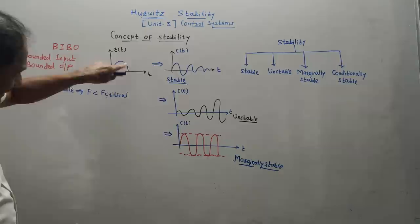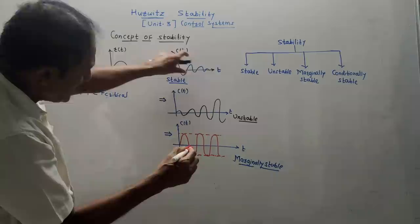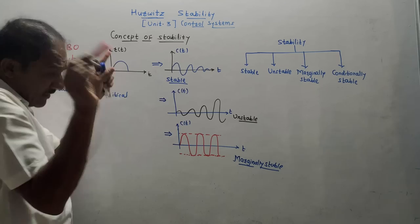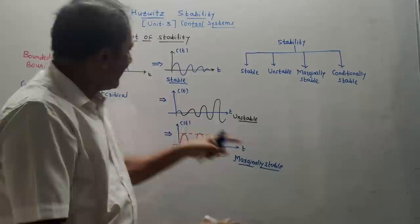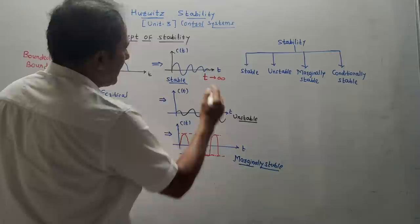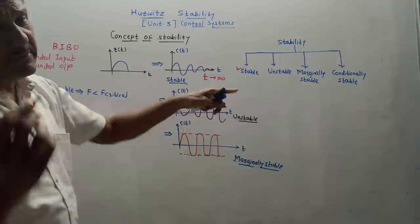So if we have R(T) which is finite — as I have shown in this diagram — and we apply it to a system and get a finite output, then it is called a stable system. Simple trick to remember: finite input given and finite output received — that is a stable system. Then the output goes on reducing and as time T tends to infinity, the output tends to zero. This is the characteristic of a stable system.